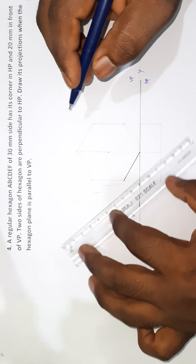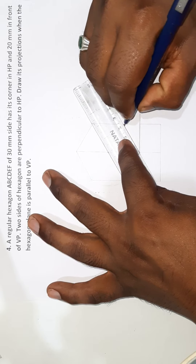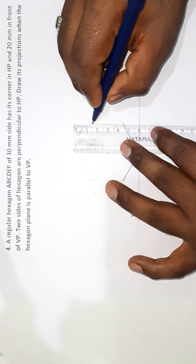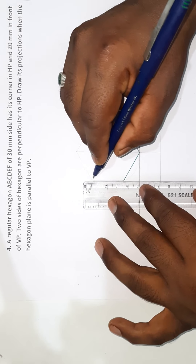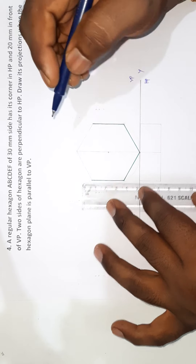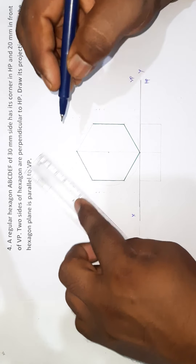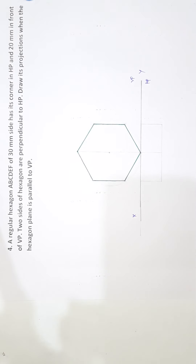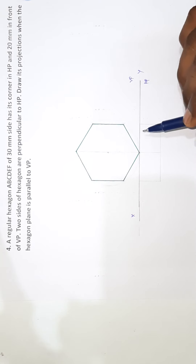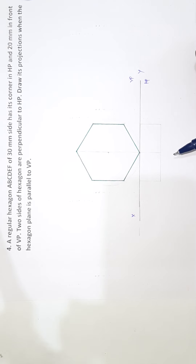We're going to set the right side and make the right corner, then we're going to set the left side. Then we're going to set the right corner, then we turn two points. So we are going to draw. Now we have to drop the corner. Next, we have to drop the corner.